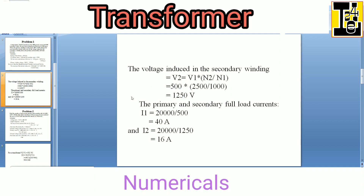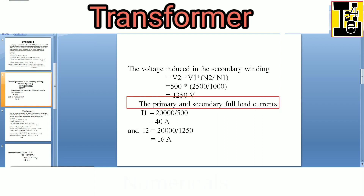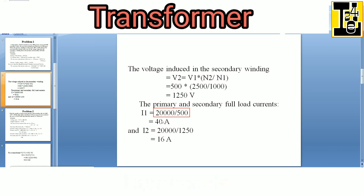The third bit is the primary and secondary full load currents. The formula is I1, the primary current, is equals to full load kVA divided by the primary induced voltage. 20000, which is 20 kVA, divided by 500, gives 40 ampere.